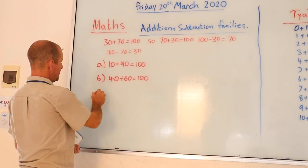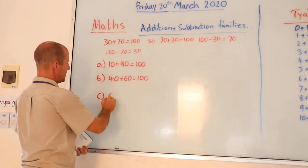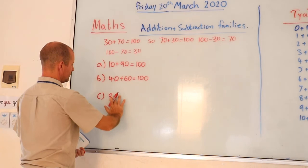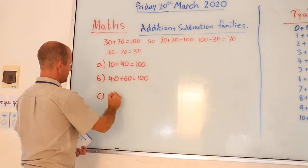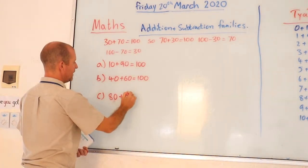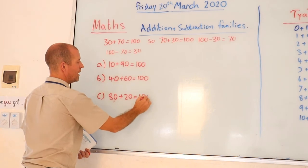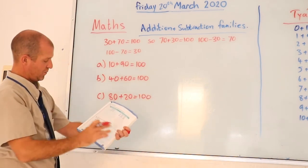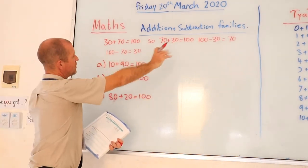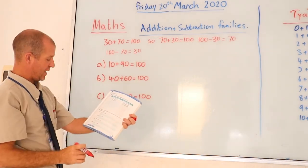Part C is 80 plus, silly teacher there, 80 plus 20 is equal to 100. And you can work out the addition and subtraction families and please put them in the spaces provided.